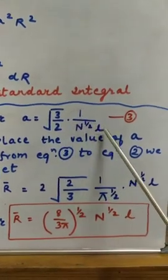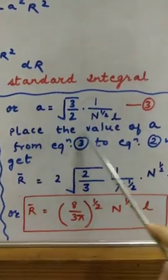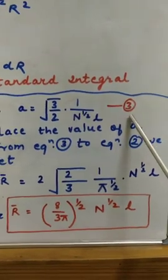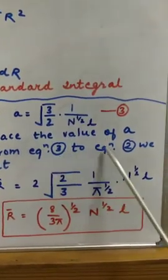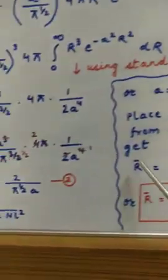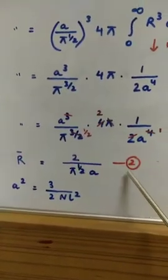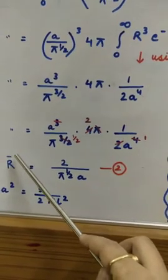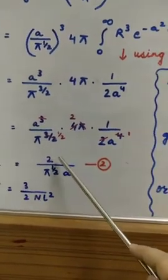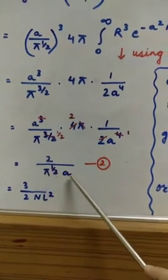Now this value of a, that is in equation 3, we will place this value of a from equation 3 to equation 2. Which was our equation 2? Our equation 2 was r bar, that is our mean end to end distance of the polymer chain equals 2 upon pi to the power half a.